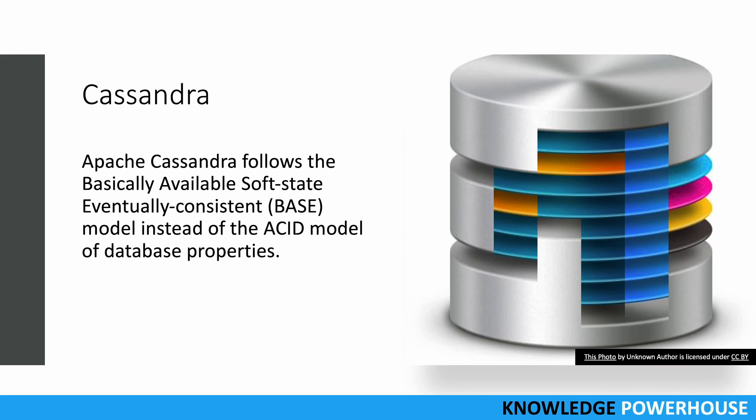From an architecture perspective, Apache Cassandra follows the BASE model — Basically Available, Soft state, Eventually consistent — instead of the ACID model for database properties. The ACID model is used only in RDBMS, while the BASE model is used in NoSQL. Cassandra generally follows the BASE model.